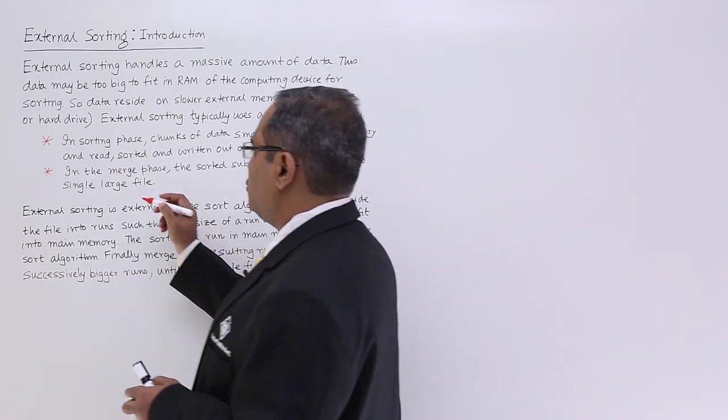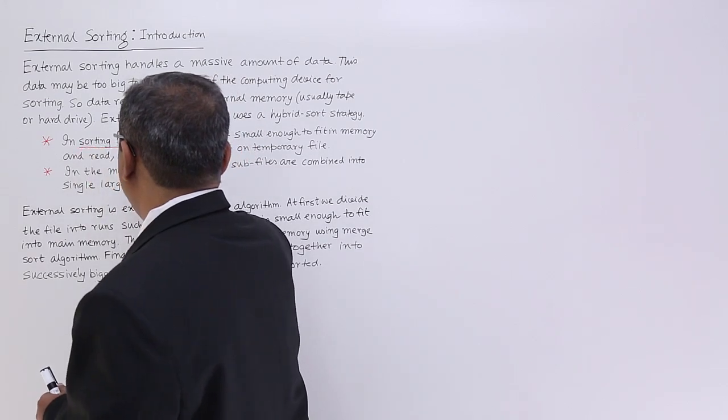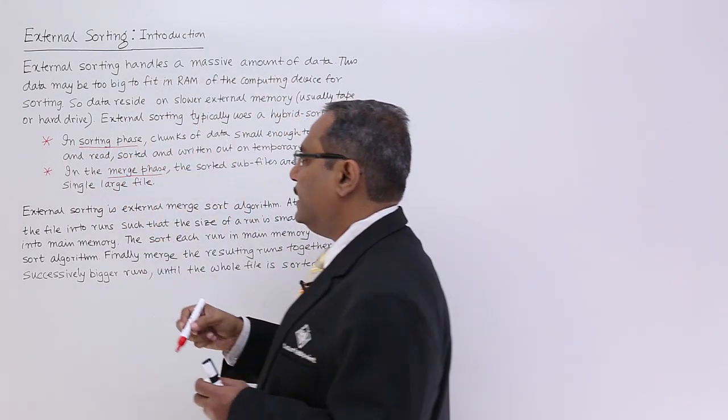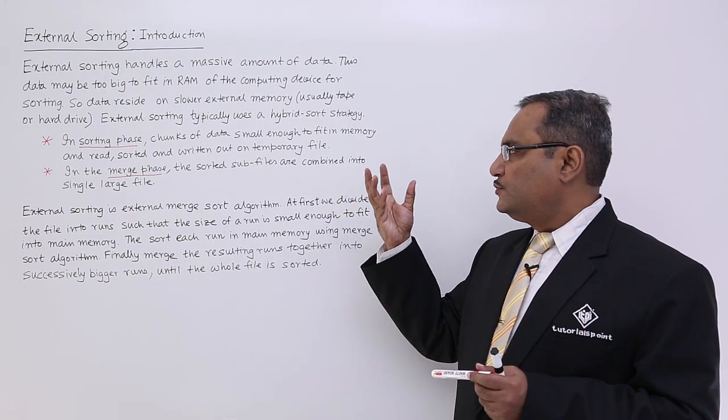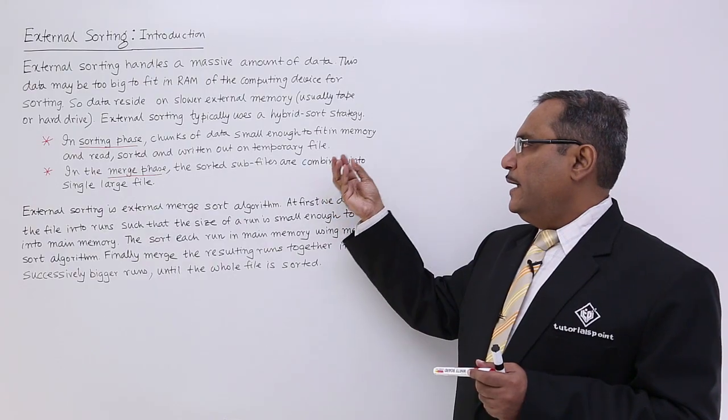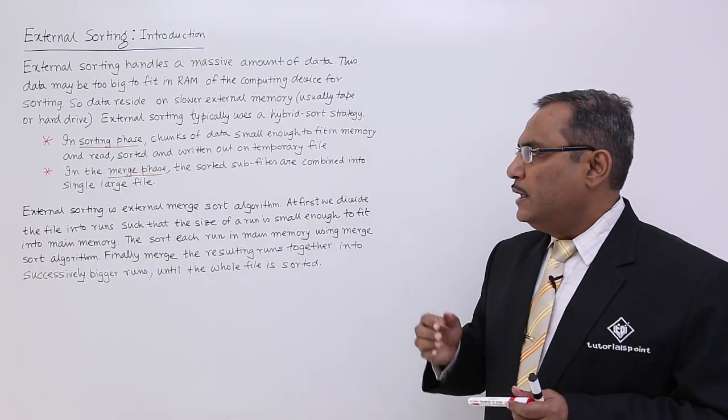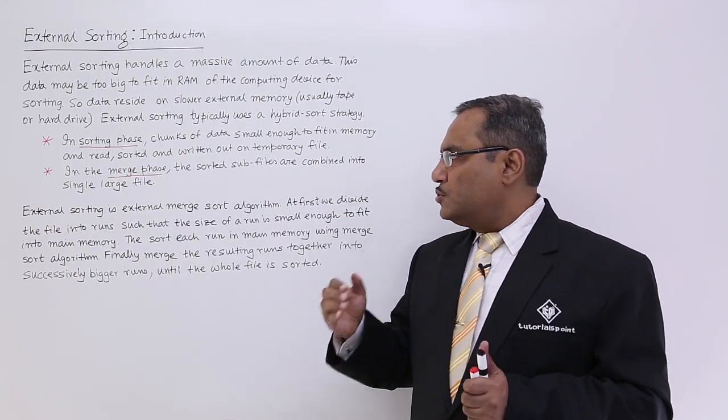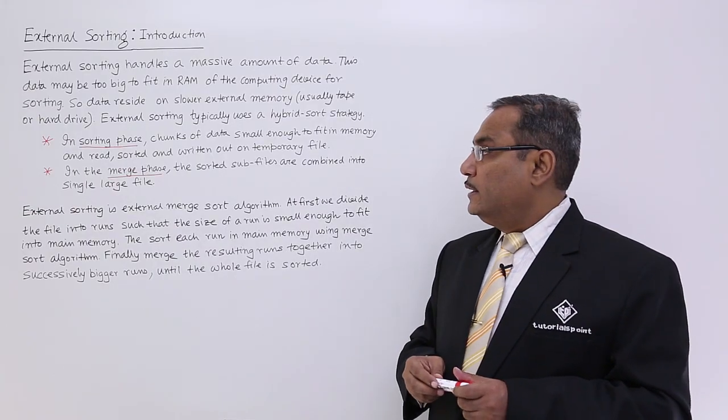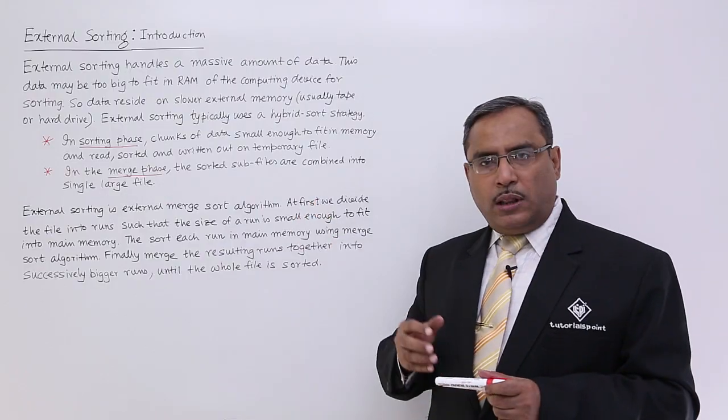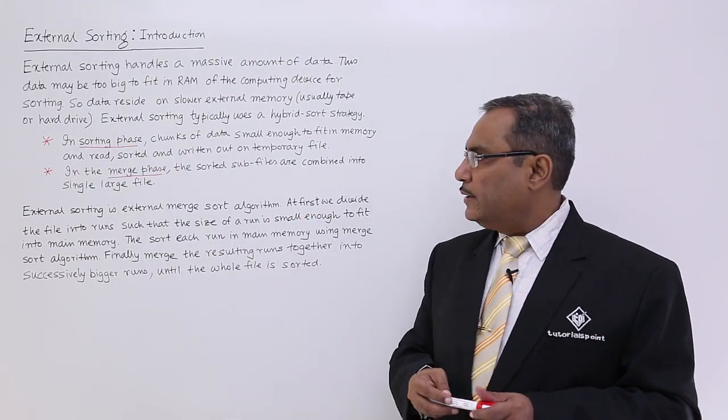The phase number one is the sorting phase, and phase number two is the merge phase. In case of sorting phase, chunks of small data enough to fit in memory are read, stored, and written on the temporary file. While sorting this small amount of memory, we shall be using internal sorting.